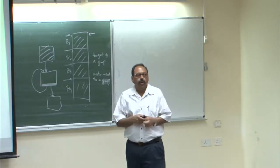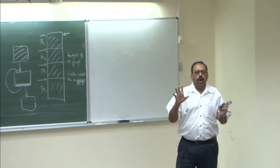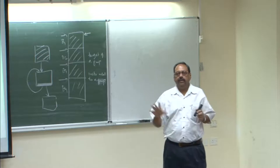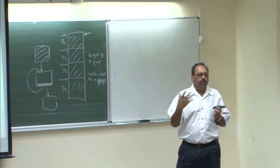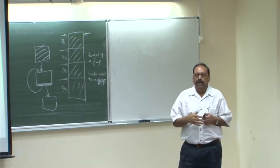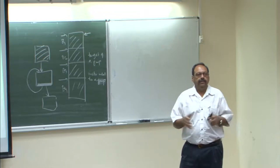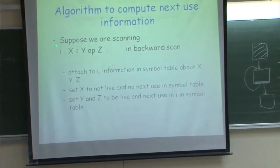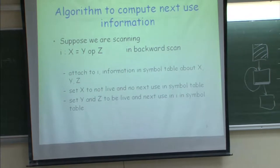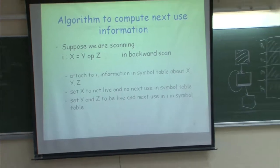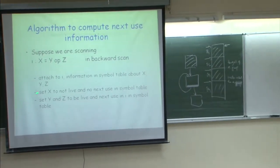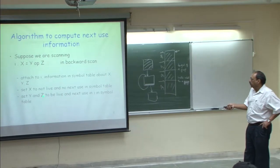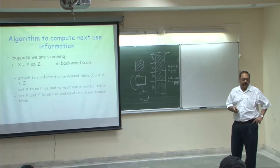For each basic block, we maintain a simple symbol table that records the status of each variable — whether it is live or dead. Live means it has a future use; dead means it does not. For instruction i defining x and using y, z: we attach to instruction i the current information in the symbol table about x, y, z; then set x to not live (no next use); then set y and z to live with next use at i in the symbol table.